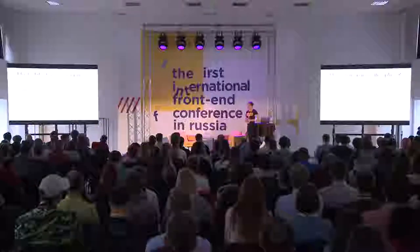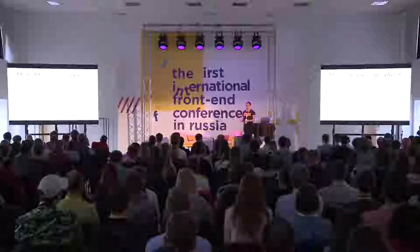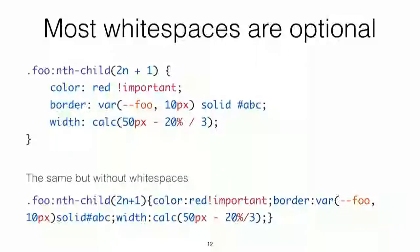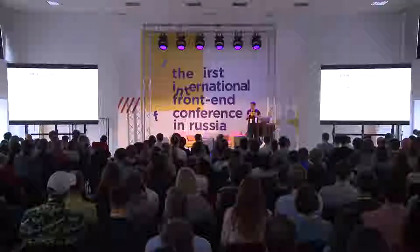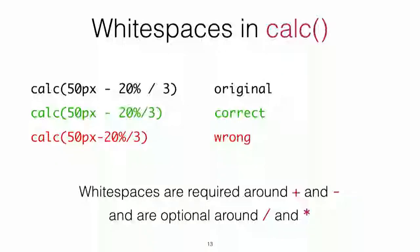You should know that most whitespaces are optional in CSS. On this slide you can see the same CSS in different forms — the first one written in a readable way, and the second in a shorter way. We have a calc function in CSS, and we can use whitespaces around operators, but we can also remove some whitespaces around them, but not all of them. We can remove whitespaces around plus and minus, which is quite different from other operators like slash and asterisk.